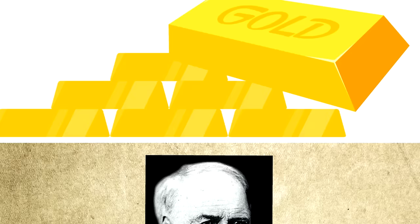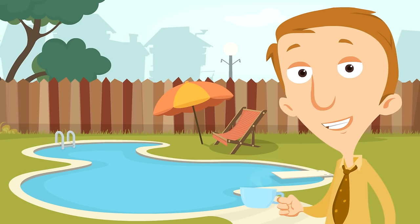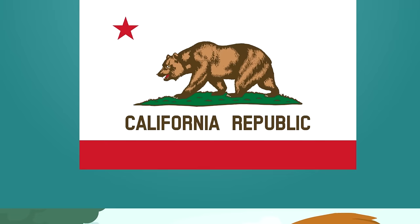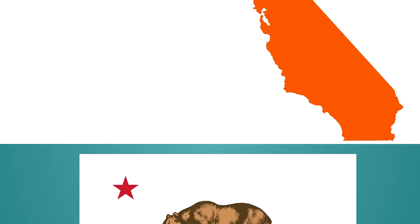So California's nickname is the Golden State. Now let's look at the flag of California. Here it is — it says 'California Republic' on it. The bear on the flag is a California grizzly bear, and the drawing is said to have been based on a real bear named Monarch. The state mammal is also the grizzly bear.